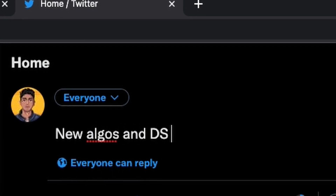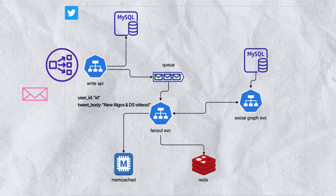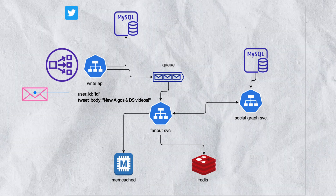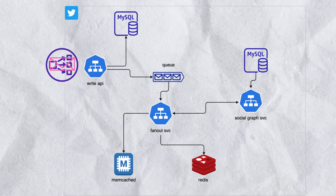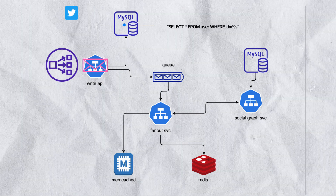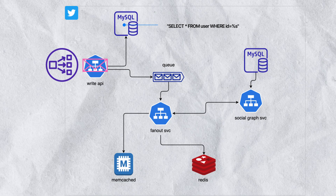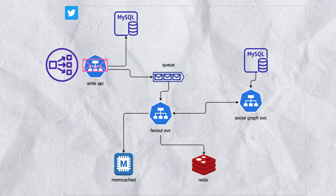Let's get into that architecture. When a user sends a tweet to Twitter servers, it's represented by this envelope. This envelope is going to contain the user ID of the person that sent the tweet, as well as the tweet body. This payload will likely hit a load balancer and eventually end up at this Write API service. When it arrives, the Write API is going to check to see if the user ID exists in a user table in a MySQL database, and if the user does exist, it's going to insert the tweet into a tweet table in this same database.